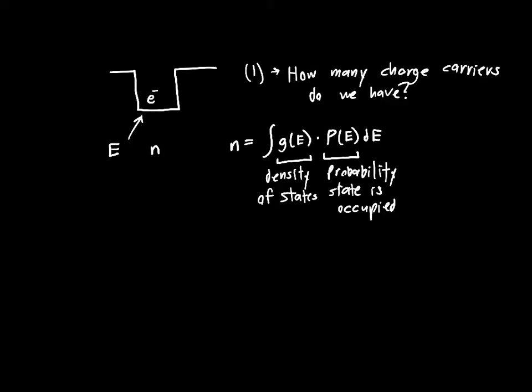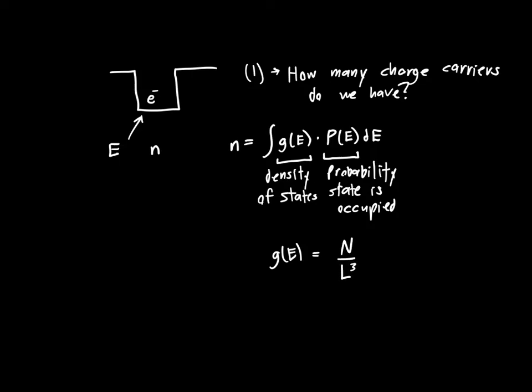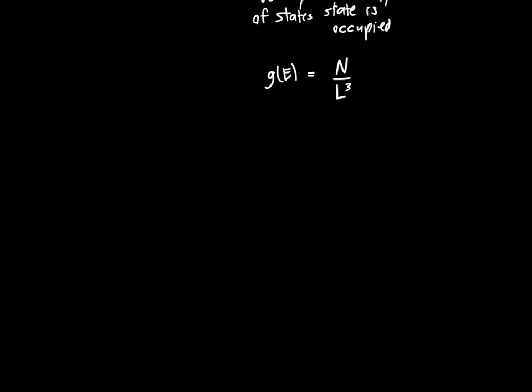And so this video is going to focus on finding the density of states or an expression for the density of states, G of E. Or you can rewrite that as the total number of states divided by the total volume of the semiconductor. So we want to count the total number of states. And it's easier to start by counting more familiar objects.